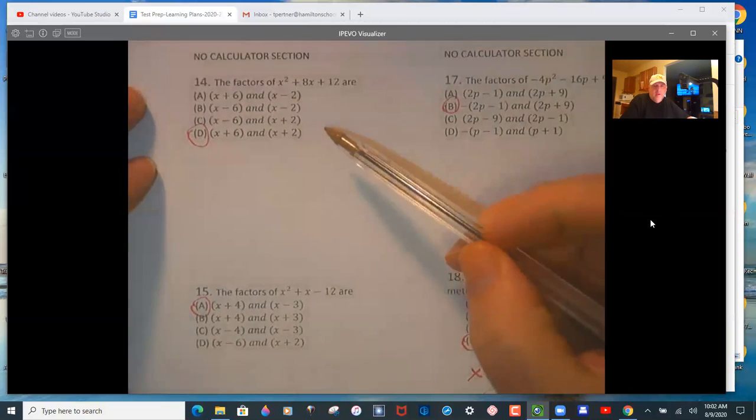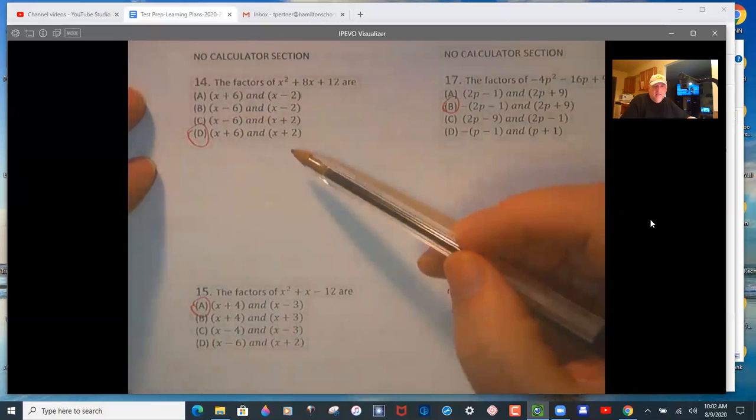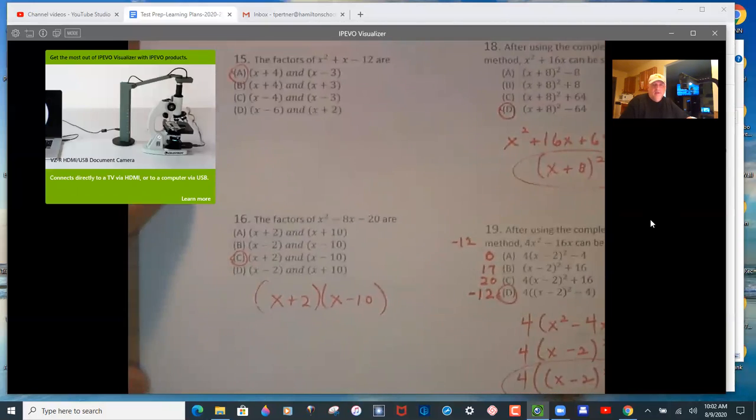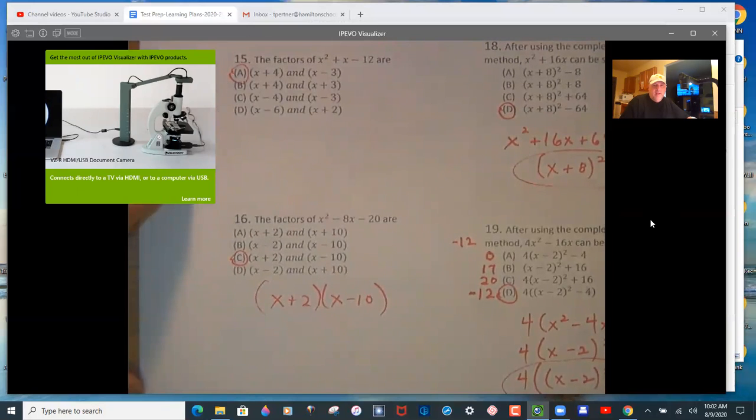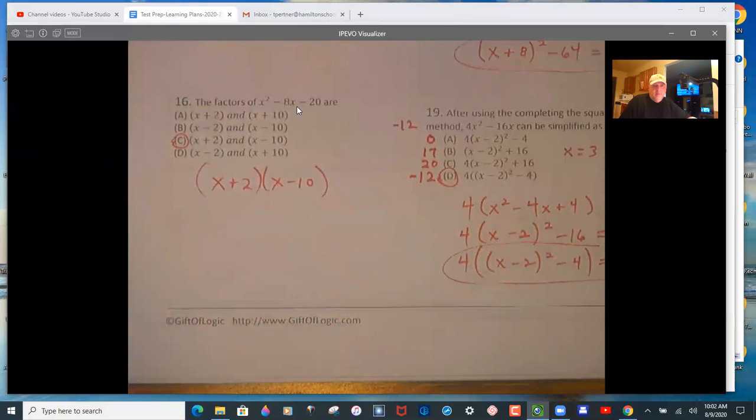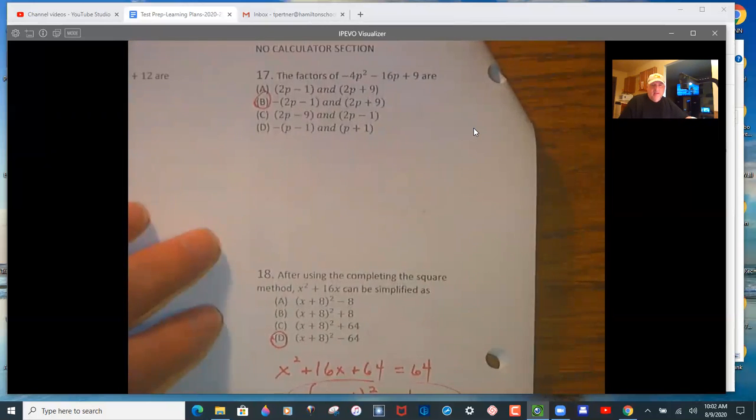So factoring, here we go. Two numbers that multiply to 12 and add to 8. So x plus 2, x plus 6. 15, same idea. Two numbers that multiply to negative 12 and add to 1. So 4 and negative 3 are those two numbers. 16. Two numbers that multiply to negative 20 and add to negative 8. So negative 10 and 2. On and on with the same idea.